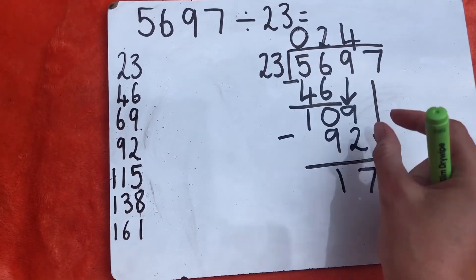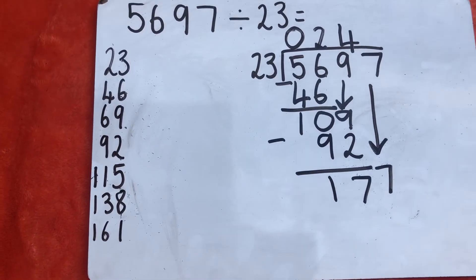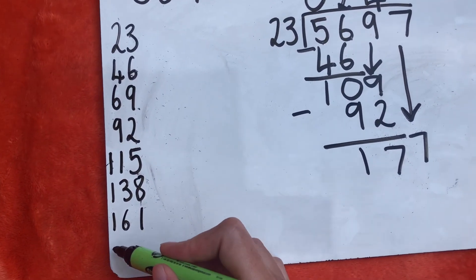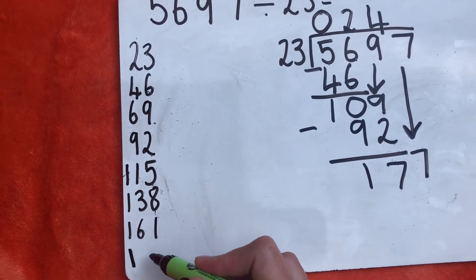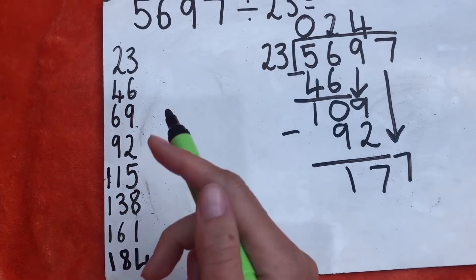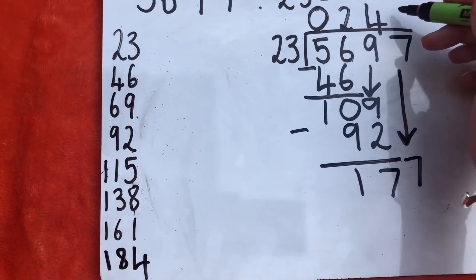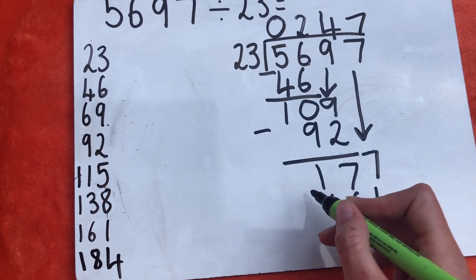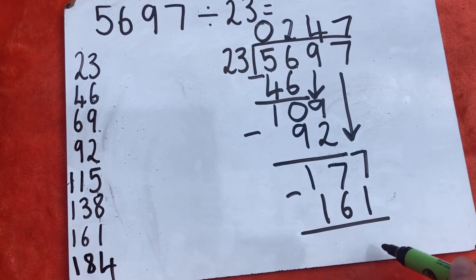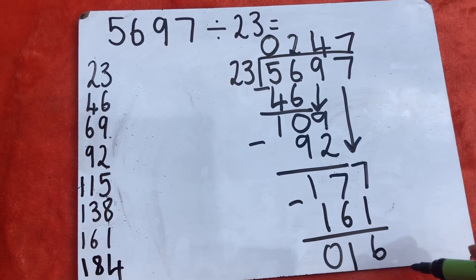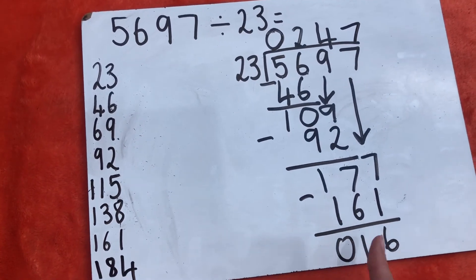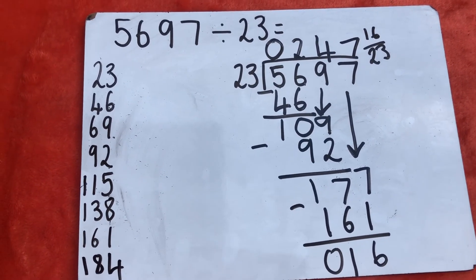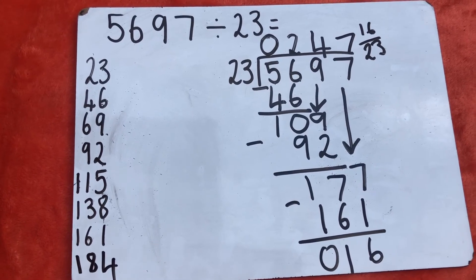Instead of writing remainder 17 up here, we bring it down so there's more space — it's more spread out. How many 23s are in 177? I check my times tables: there are 7 whole groups. 23 multiplied by 7 is 161. I do my subtraction: 7 take away 1 is 6, and 170 take away 160 gives me 16. I've got nothing more to bring down — there are no full groups of 23 in 16 — so that must be my remainder: 16 out of a whole group of 23. So my quotient would be 247 and 16 twenty-thirds.